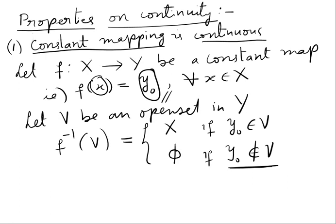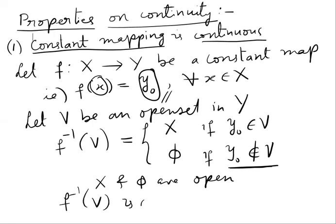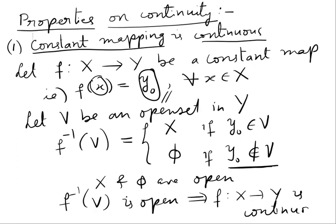In both cases, we know that the null set and the whole set X are both open sets. So X and null set are both open. In both cases f inverse V is open. Therefore, the constant function f from X to Y is continuous. So, we proved constant mapping is continuous.